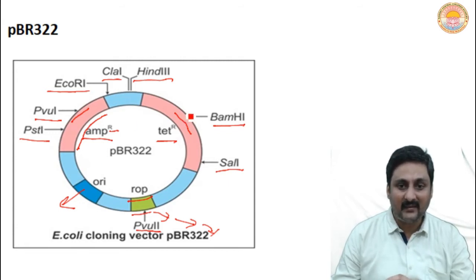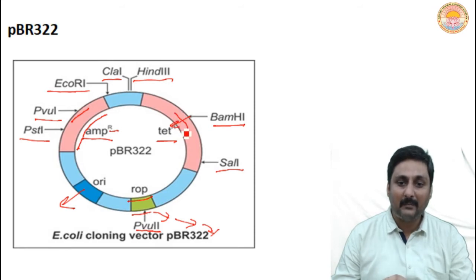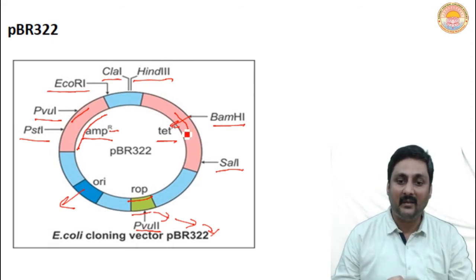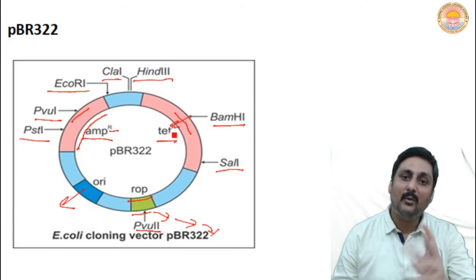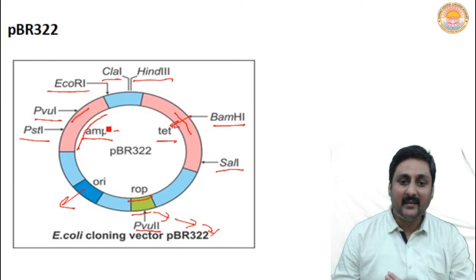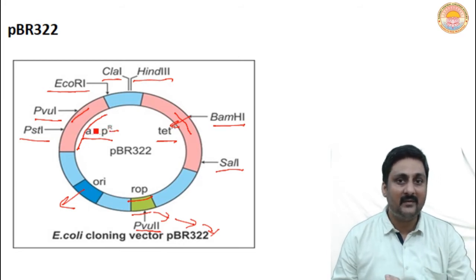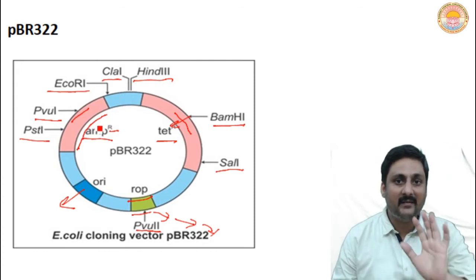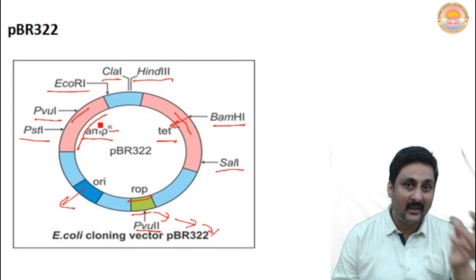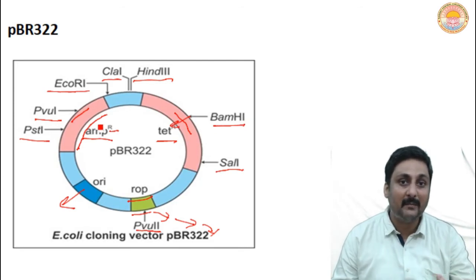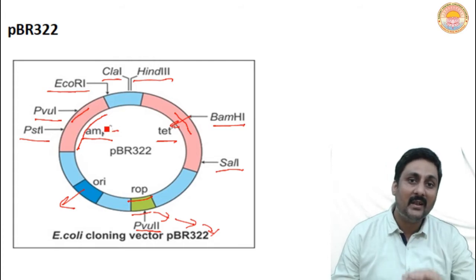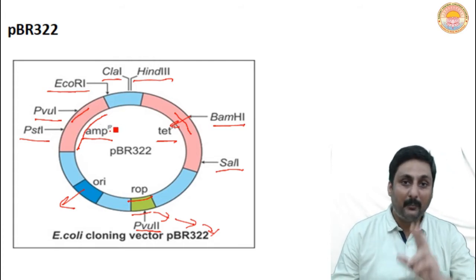For example, you used BAMH1 in the tetracycline resistant gene region and opened up the vector. Then you took a DNA segment — your desired DNA segment was inserted right inside the tetracycline resistant gene. So the tetracycline resistant gene will now become non-functional. But the ampicillin resistant gene is still functional because you did not insert the desired DNA there. Now this entire vector along with the desired DNA is allowed to enter inside the host cell. How will you know if the vector entered or not, and whether the desired DNA came along with it?